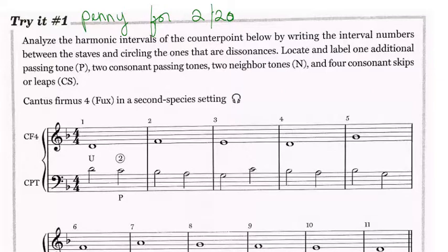And what you're going to do here is simply to label the intervals between the staves, just like you always have, circle ones that are dissonant, and then label passing tones, neighbor tones, and consonant skips.